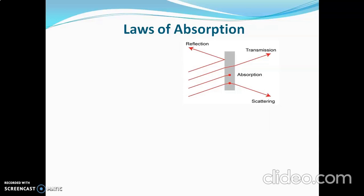But if the sample is a clear solution and does not have suspended particles, the amount of scattered light will be very less and can be neglected. The three phenomena that remain are: light reflected, light transmitted, and light absorbed. In mathematical form, the equation is I0 = Ia + It + Ir.